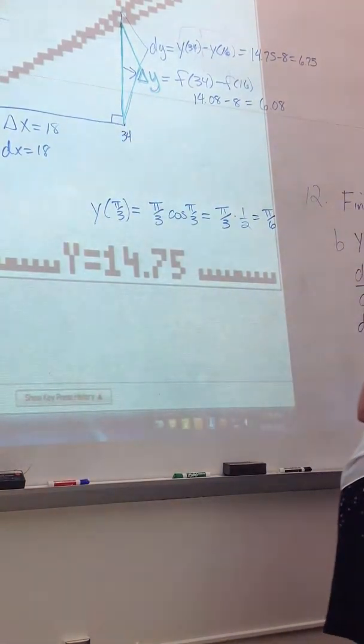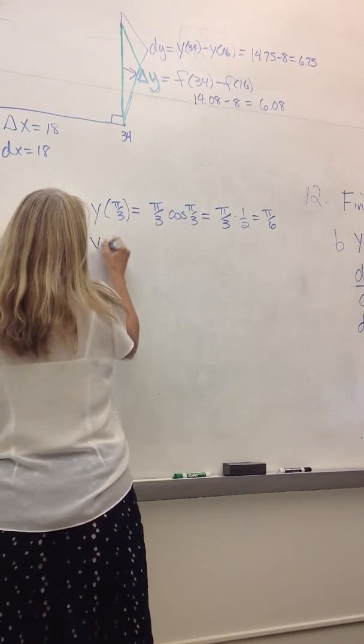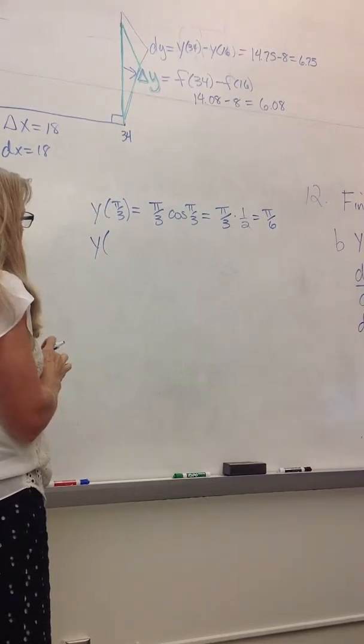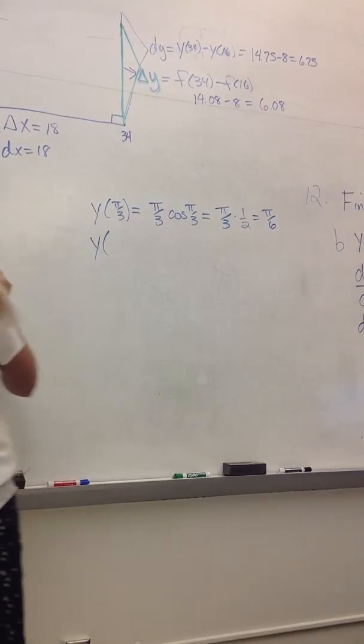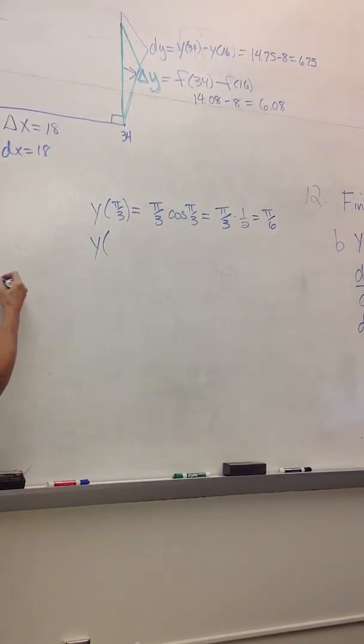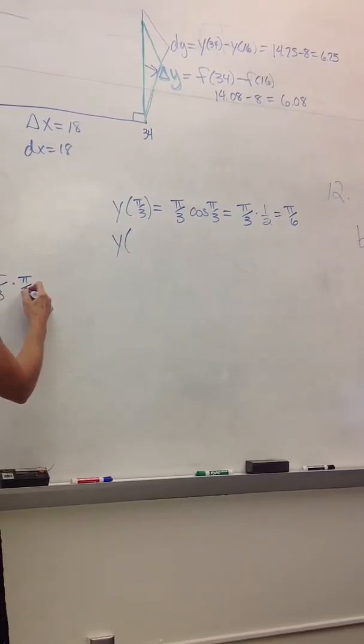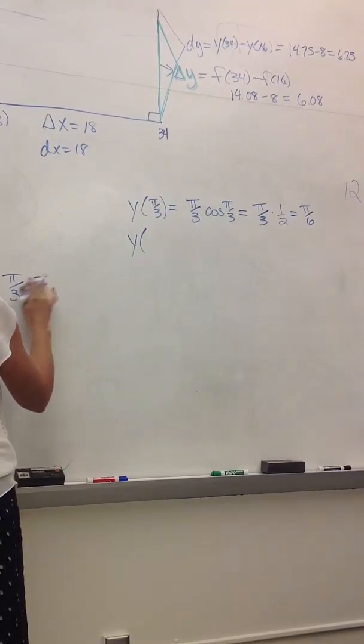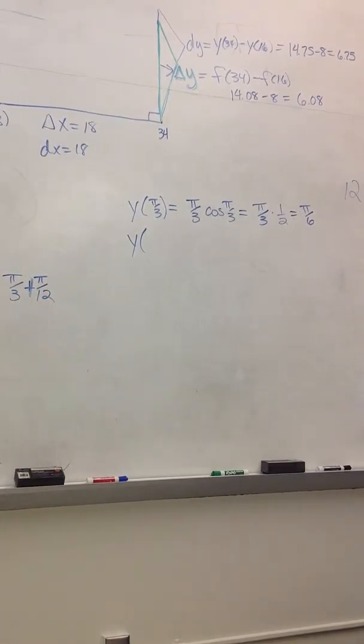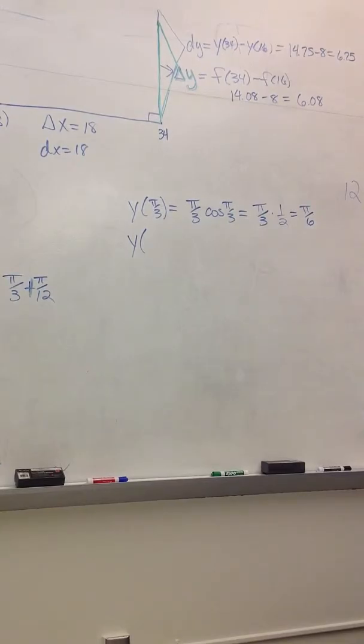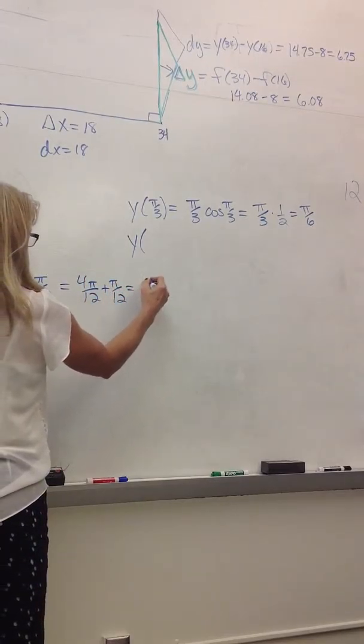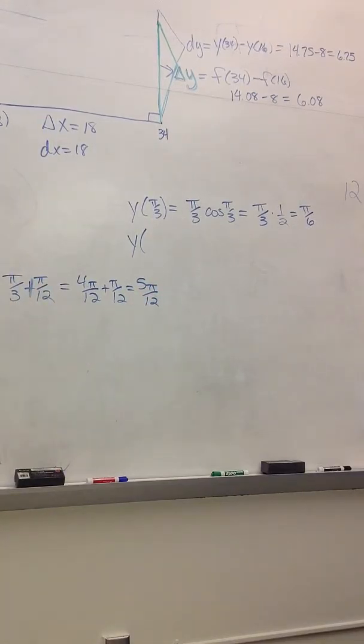All right, so if I move sideways a little bit, why don't I scoot over by π over 12. We're going to imagine scooting over in the x direction by π over 12. So, that's going to be 4π over 12 plus 1π over 12 is 5π over 12 is my new x, my new u value, my new input.